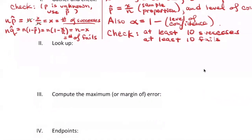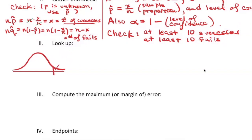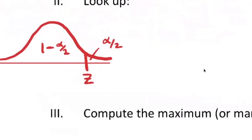The lookup part requires getting z-alpha-over-2. The right tail has area alpha over 2, and that's what defines z-alpha-over-2. The area to the left of that is 1 minus alpha over 2 — that's a rule of complements. The notation is Z with the subscript alpha over 2.